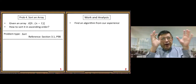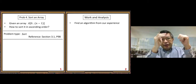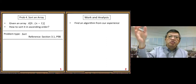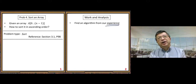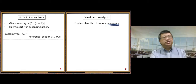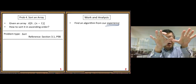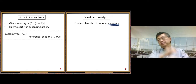I'd like to point out another common problem-solving approach that people usually use: find an algorithm from our experience. Experience is important. If you do not have experience, you need to go through a long way to find a solution. When you have experience, you can build on top of your existing experience, and that will help you go much faster.